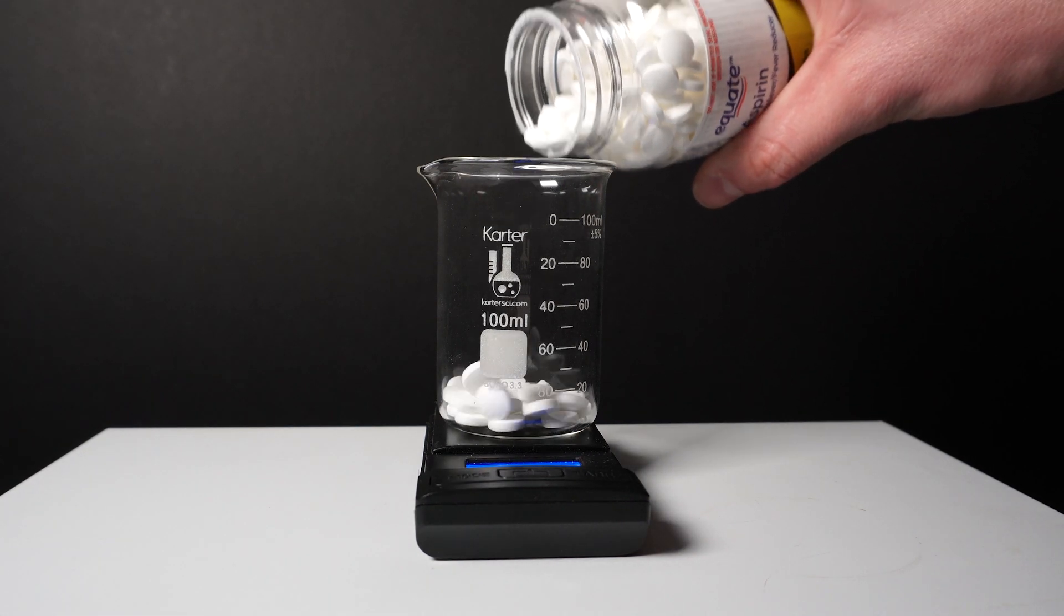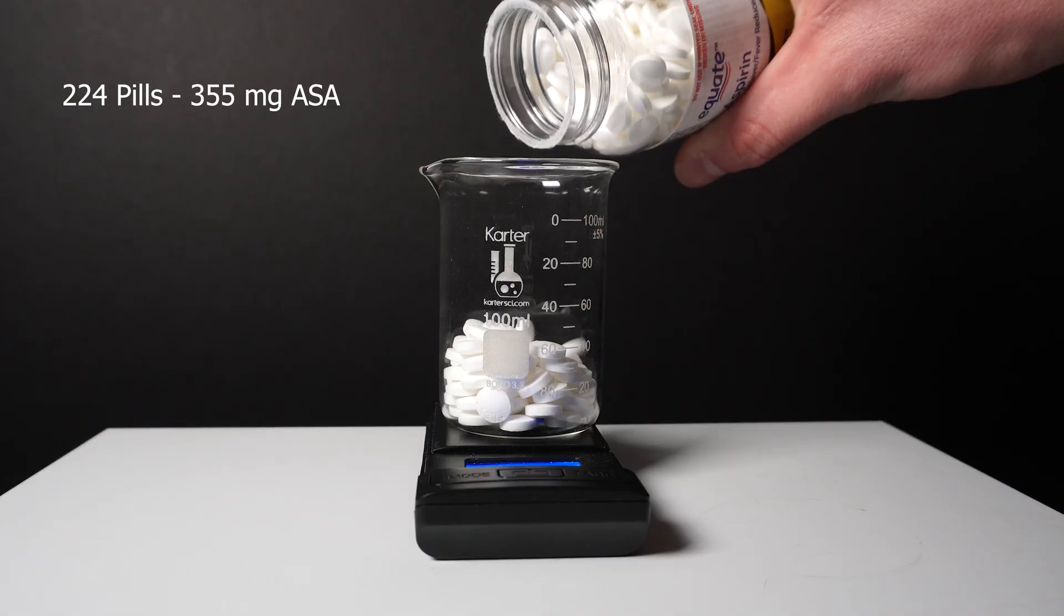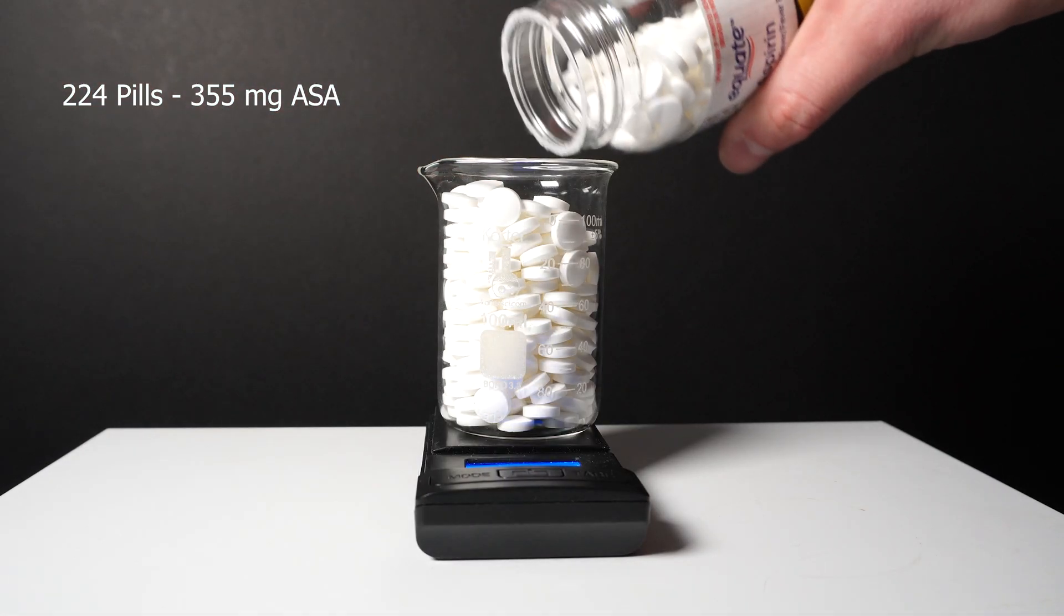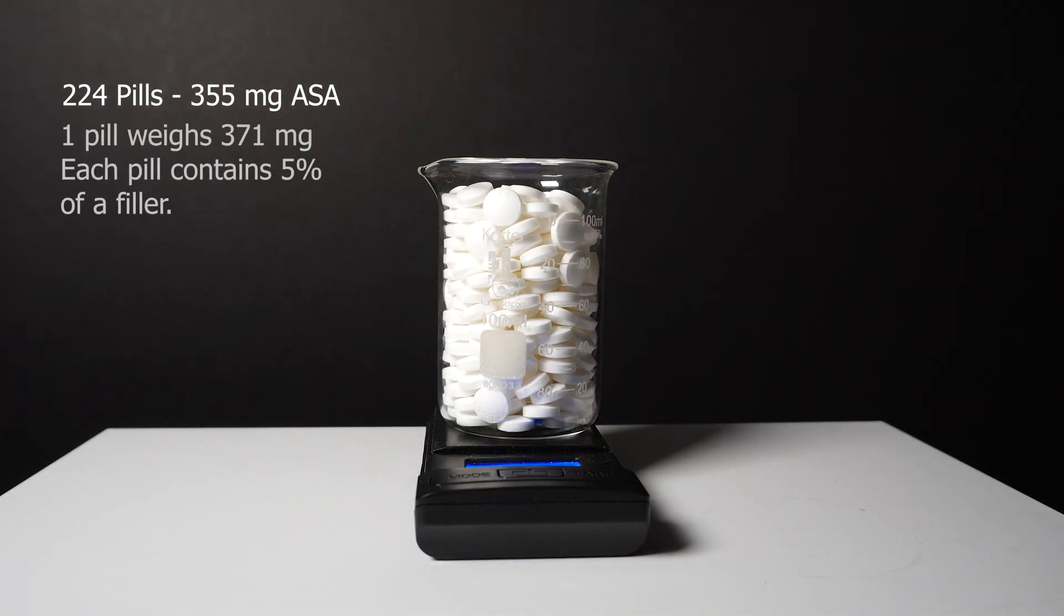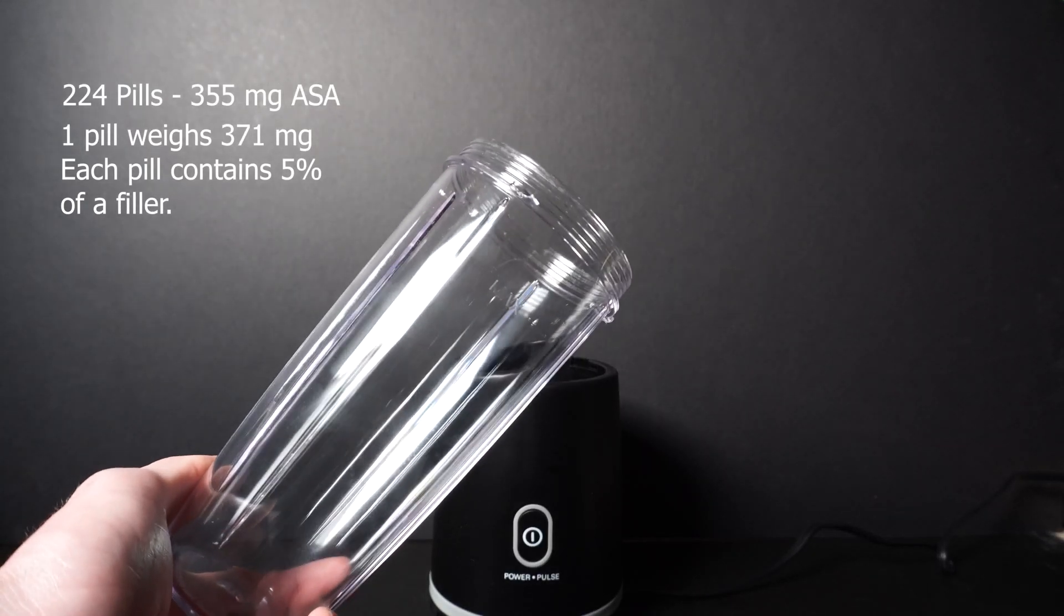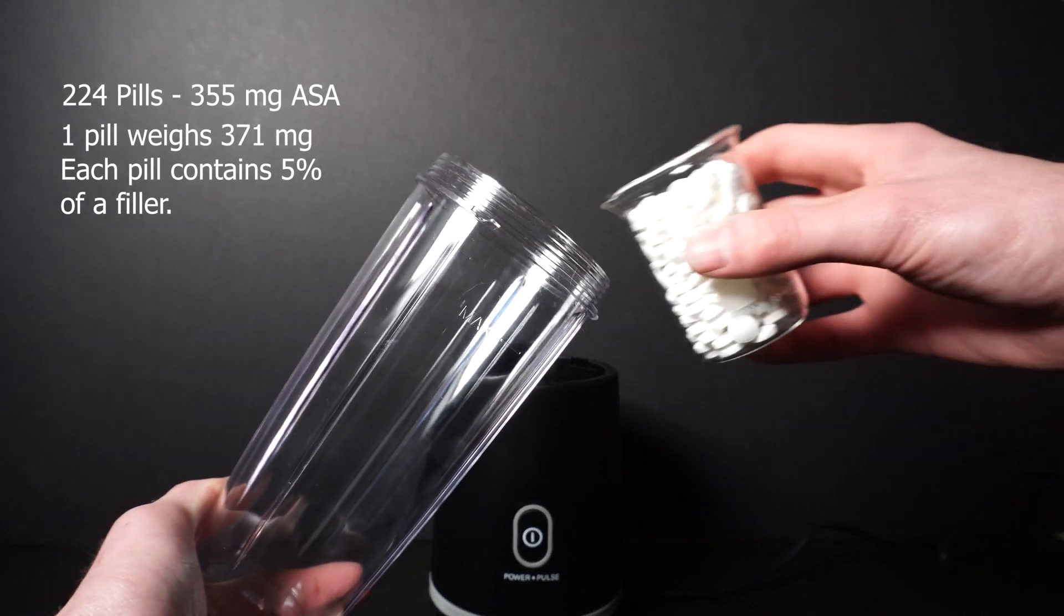I will be using about 230 pills that are 355mg of ASA apiece. The pills total weight is about 371mg apiece, so there is very little filler in each pill.